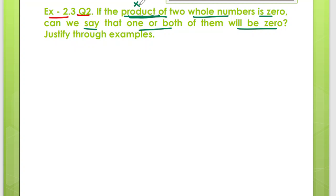So this product is for multiplication. We have said that if the product of two whole numbers, if we multiply two whole numbers and the answer is 0, what can we say? Will one number be 0, or will both be 0? Is this right?